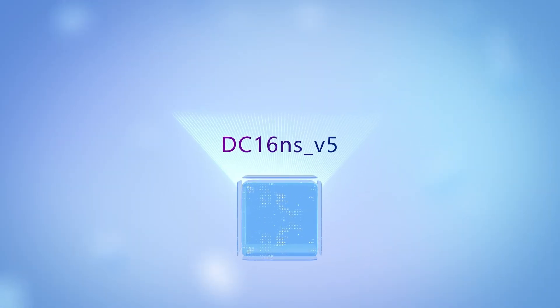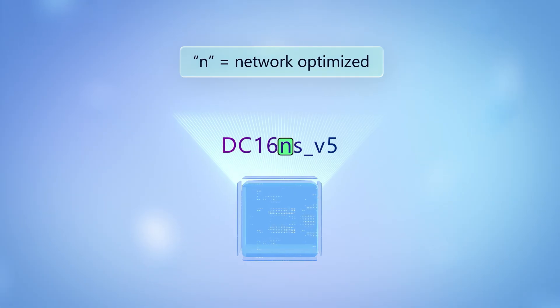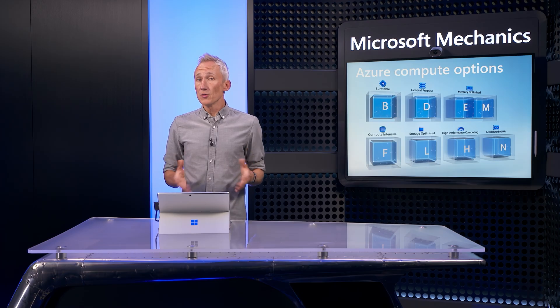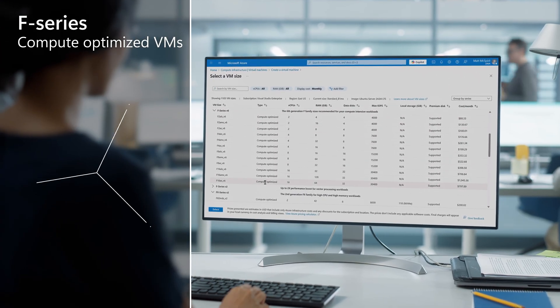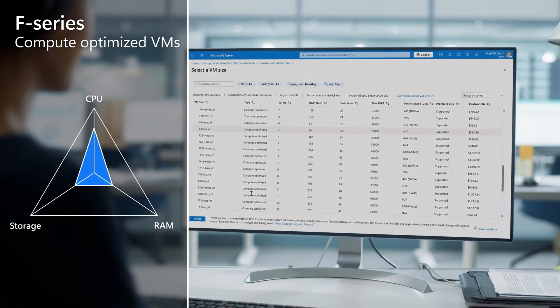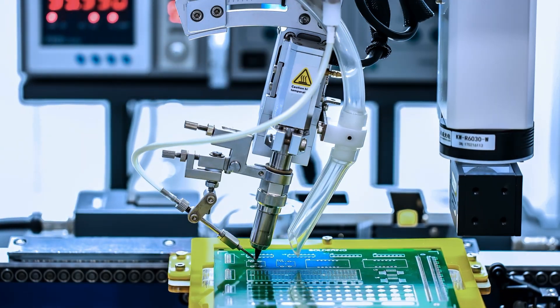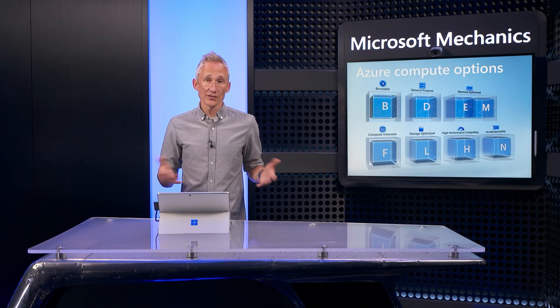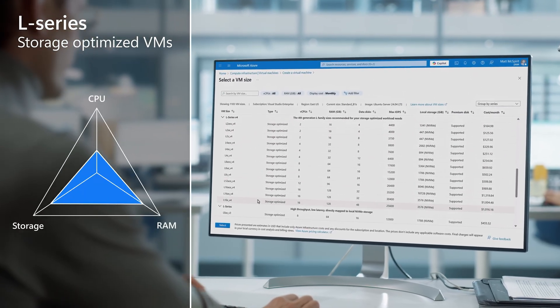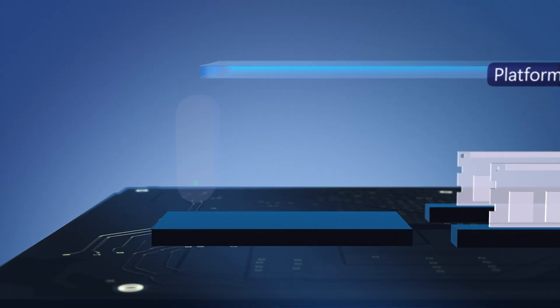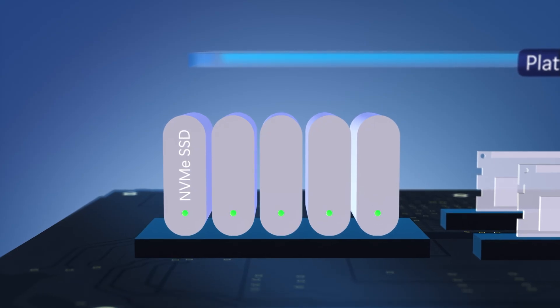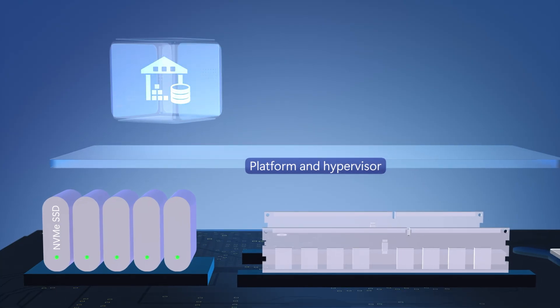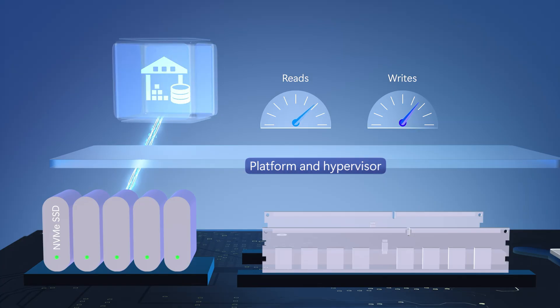For workloads demanding the cutting edge of network performance, such as network virtual appliances, large-scale e-commerce, and media processing, network-optimized variants identified by the N are available for both general purpose D series and memory-optimized E series VMs. For compute-intensive applications, F and FX series VMs have high vCPU performance and are great for workloads such as video encoding and rendering, electronic design automation, and gaming applications. Alternatively, if you need to run big data, NoSQL databases, or large data warehousing solutions on Azure, L series VMs are optimized for storage-intensive workloads and feature ultra-fast, low-latency NVMe storage that's physically mapped to the host, ideal for handling temporary data with high throughput.